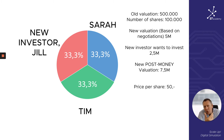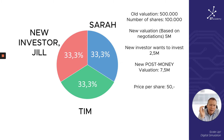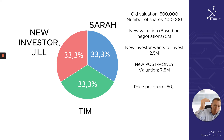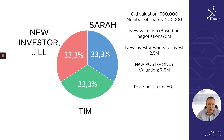This is what we call an entry-level cap table map — it's going to get more complicated, but these numbers are really important. We have the old valuation, the old number of shares, the new valuation based on negotiation, and new investor Jill investing 2.5 million. The new post-money valuation — the valuation plus the money now being invested — is 5 million plus 2.5 million, which equals 7.5 million. And the new price per share is 50.